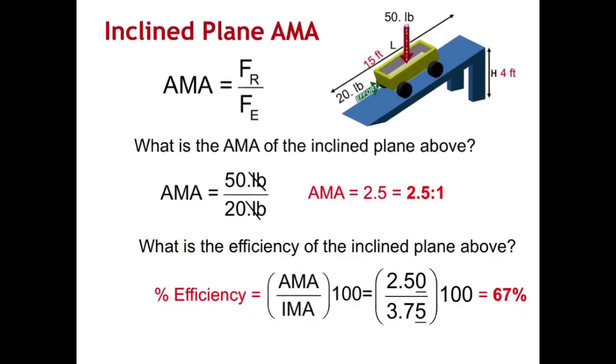Actual mechanical advantage for an inclined plane is also found using the same formula you use for levers. That is, actual mechanical advantage equals the force of your resistance divided by the force of your effort.